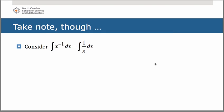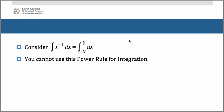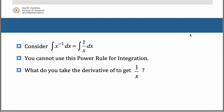A couple things to note. Consider the anti-derivative of x to the negative 1 dx, which can be rewritten as the anti-derivative of 1 over x dx. You cannot use the power rule for integration on this, because if you add 1 to the exponent and then divide by that new exponent, you end up dividing by 0, which we all know you cannot do. That means we need to come up with another way to get the rule for the anti-derivative of this function.